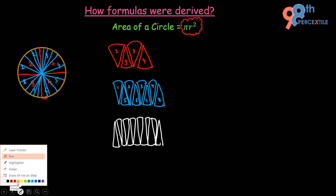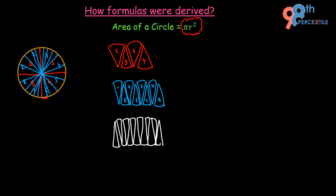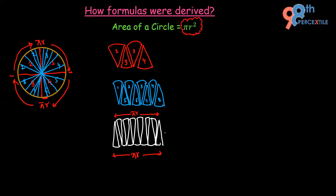Now if I talk about the length and width of this rectangle: the complete boundary of the circle is 2πr, which is the circumference. Half of it will be πr. So this complete length from here to here is πr, and the length on the other side is also πr. This means the length of the rectangle is πr. As for the width, that length is nothing but the radius of the circle.